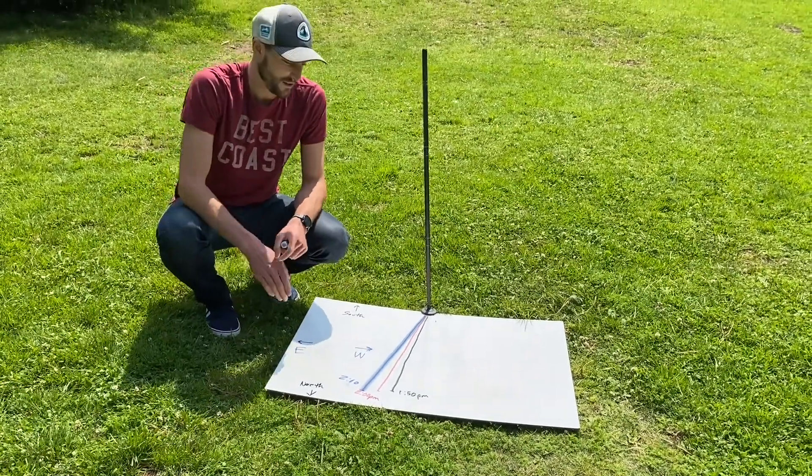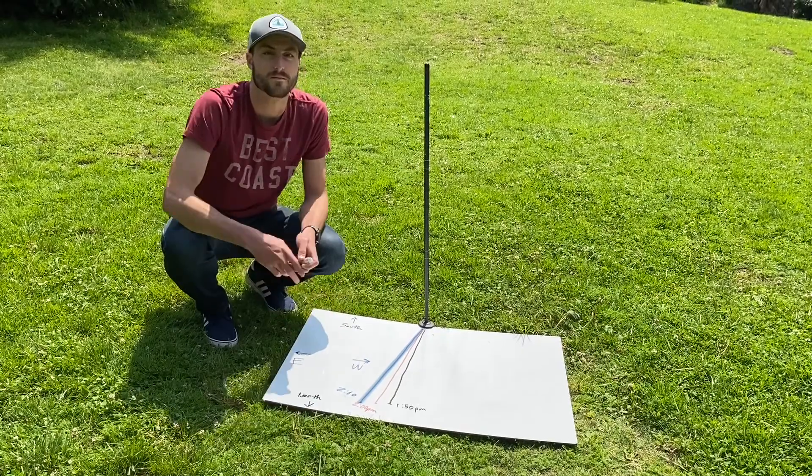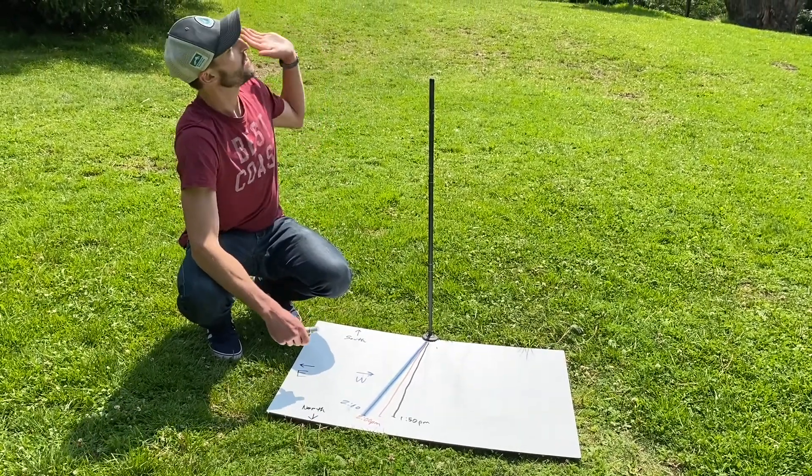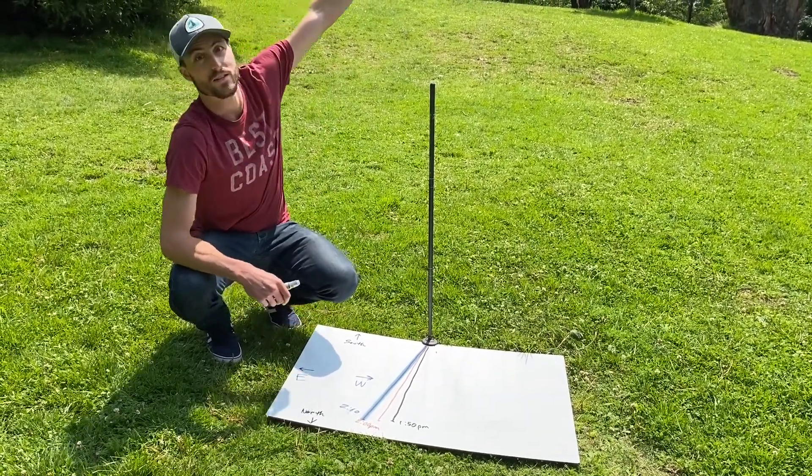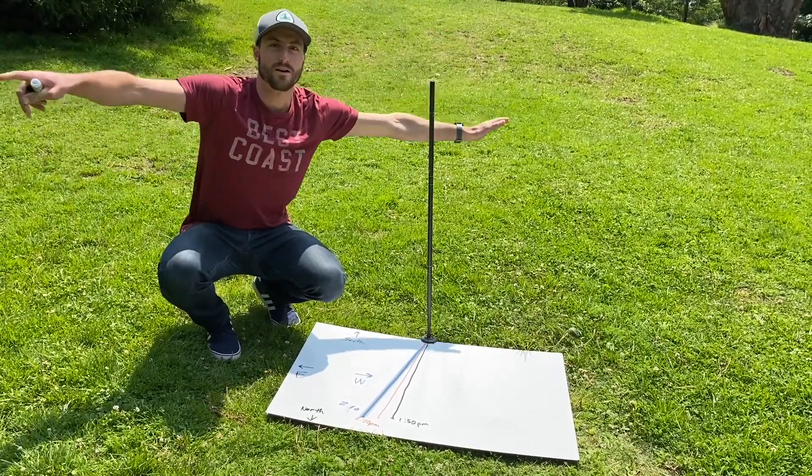So you can see the shadow is moving to the east and it keeps getting longer. That's because the Sun has passed the highest point in the sky and it's getting lower in the sky, making the shadow get longer and longer as the Sun gets lower.